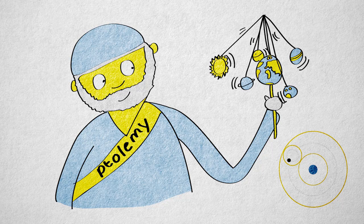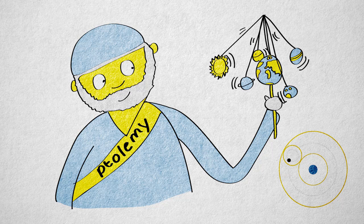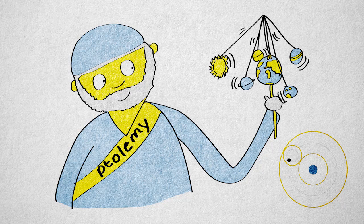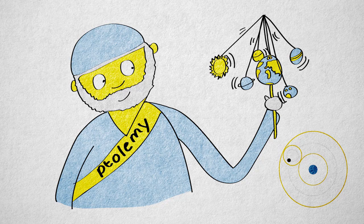Ptolemy's model allowed for accurate predictions, but it's thought that people didn't really believe that it described the actual motion of the planets. It only saved the phenomena.